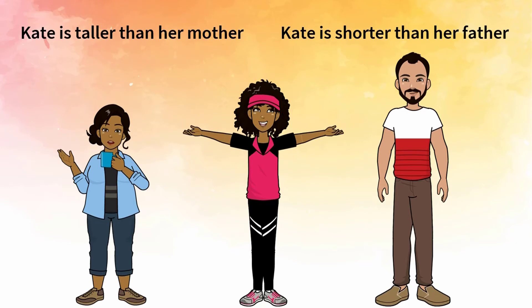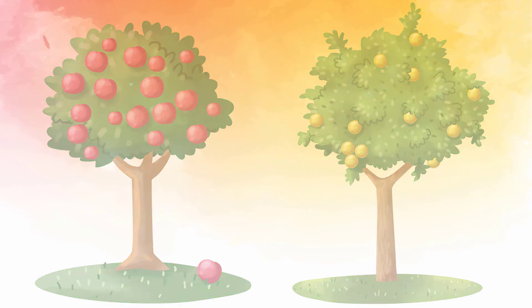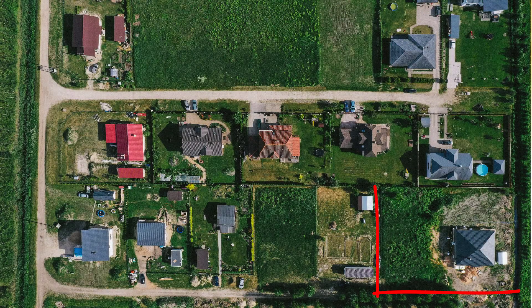Ratios are used for comparing many things that can be measured. For instance, the apple tree in the garden produces much more fruit than the orange tree. As another example, our house's area is bigger than yours.